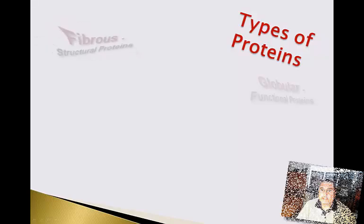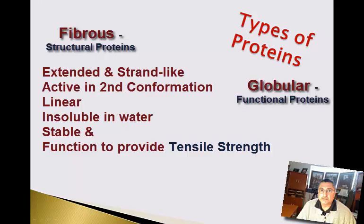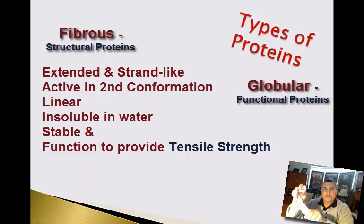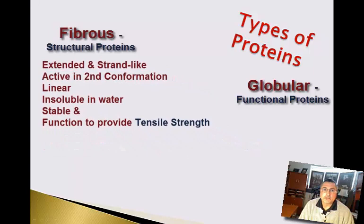Proteins can be further classified into two types: fibrous and globular proteins. Fibrous proteins are usually extended and strand-like, and they're frequently active in their secondary conformation — which could be a helical structure or a beta pleated sheet. These are typically linear in nature, insoluble in water, stable in our body, and they function to provide tensile strength.